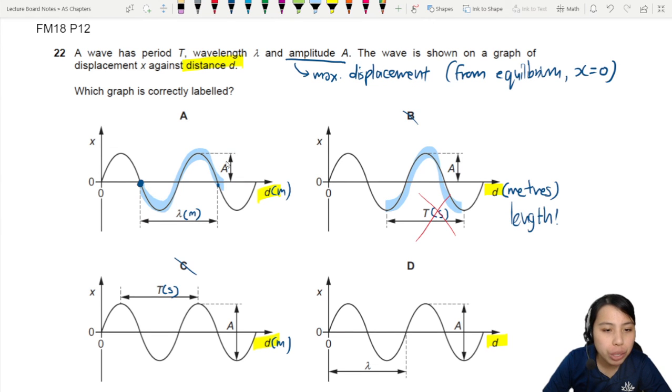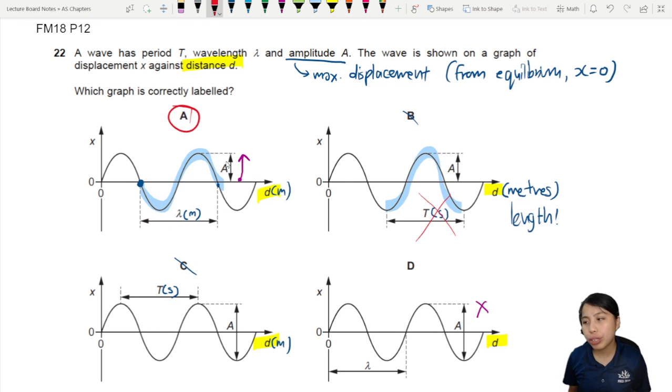So you look at all the measurements. Well, the best we can go with is this one which is from the middle upwards. This A down here, not correct. This is two times the amplitude, so it's not correct. Best choice we can go with: A.